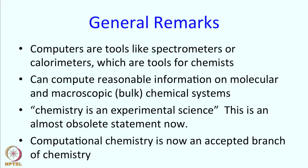The first question is why are we interested in computational chemistry? As far as chemistry is concerned, computers are tools just like spectrometers, calorimeters, and other tools which are useful for chemists. Using computers, we can compute reasonable information on molecular and macroscopic chemical systems. We often hear in school that chemistry is an experimental science, but this statement is almost obsolete now because computational chemistry is now an accepted branch of chemistry, just as physical chemistry, organic chemistry, and inorganic chemistry.